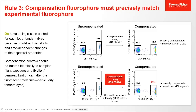Also for Rule 3, compensation controls should be treated identically to samples. Light exposure and treatments such as fixation and permeabilization can alter the fluorescent molecule. This is particularly important for tandem dyes.